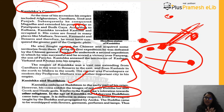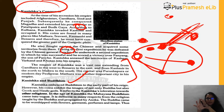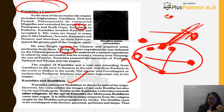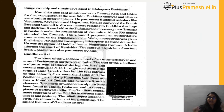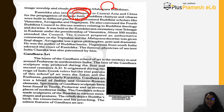Kanishka followed Mahayana Buddhism, which differed from Hinayana — the original form preached by Buddha and followed by Ashoka. In Mahayana, Buddha came to be worshipped as an idol with flowers, garments, perfumes, and lamps, introducing expensive rituals and image worship. Kanishka also sent missionaries to Central Asia and China for the propagation of this new faith, and Buddhist chaityas and viharas were constructed in different places.